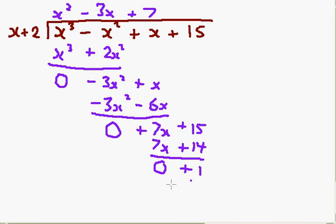OK, this number here that is left is your remainder. So you could also write that as x squared minus 3x plus 7 plus 1 over x plus 2. That would be exactly the same thing.